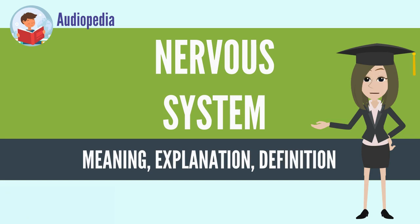The PNS is divided into three separate subsystems: the somatic, autonomic, and enteric nervous systems. Somatic nerves mediate voluntary movement. The autonomic nervous system is further subdivided into the sympathetic and the parasympathetic nervous systems. The sympathetic nervous system is activated in cases of emergencies to mobilize energy, while the parasympathetic nervous system is activated when organisms are in a relaxed state. The enteric nervous system functions to control the gastrointestinal system. Both autonomic and enteric nervous systems function involuntarily.